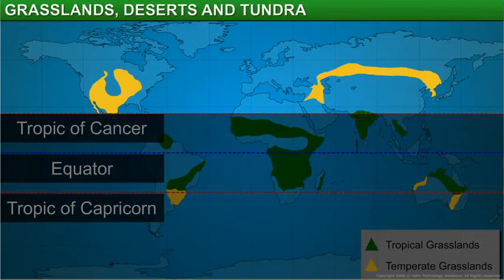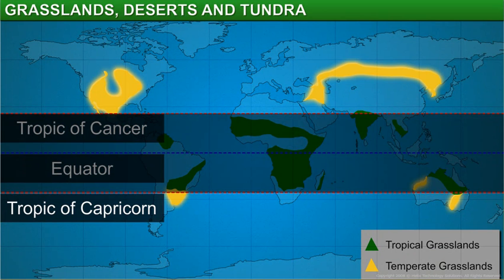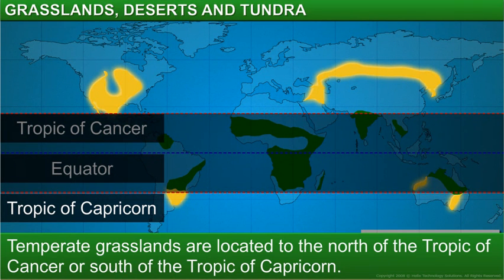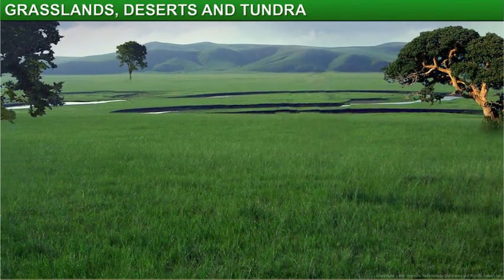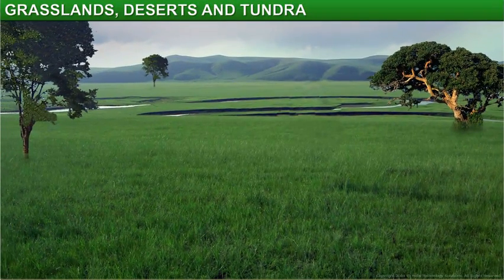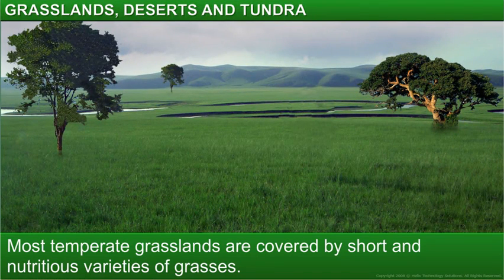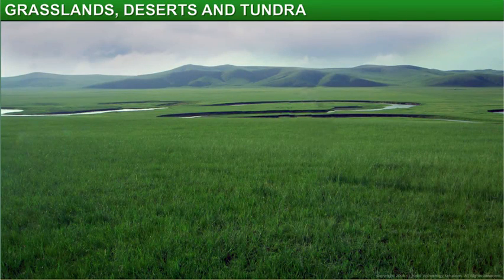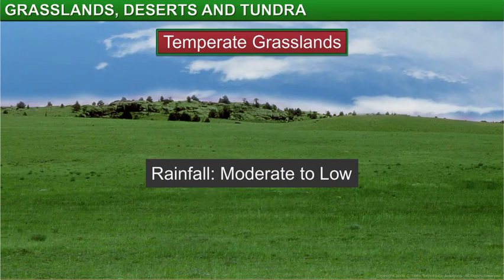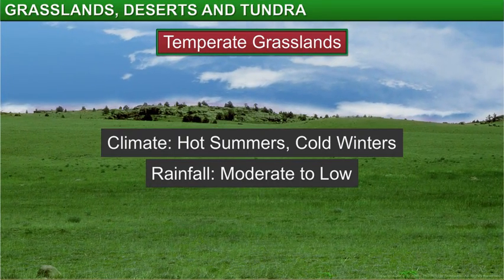As we move to the north of the Tropic of Cancer or south of the Tropic of Capricorn, the vegetation changes to temperate grasslands. Most of the temperate grasslands are covered by short and nutritious varieties of grasses. Trees or large shrubs disappear from the landscape. Temperate grasslands receive a lot less rain than tropical grasslands, and they experience hot summers and cold winters.